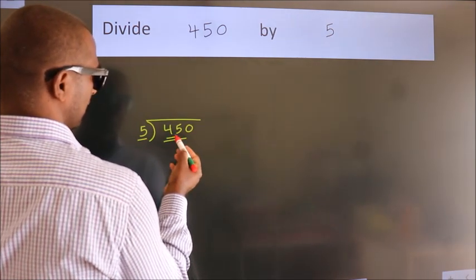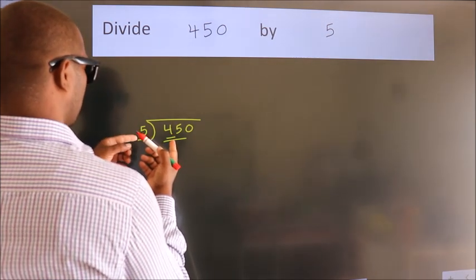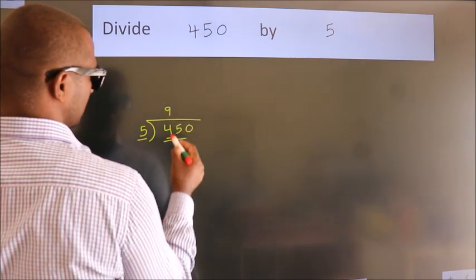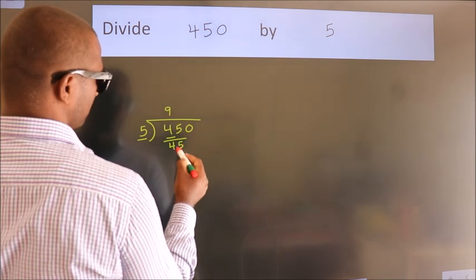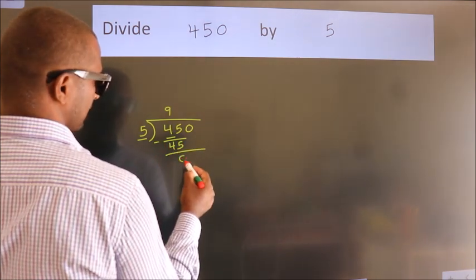When do we get 45 in the 5 table? Five nines is 45. Now we should subtract. We get zero.